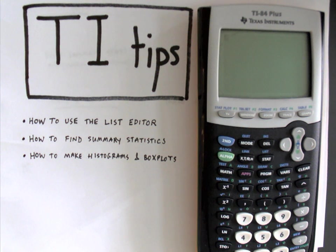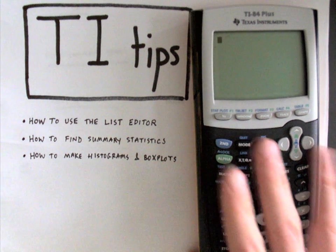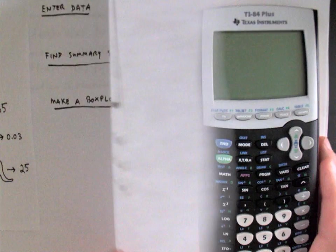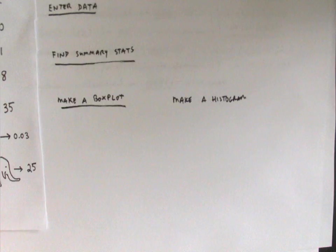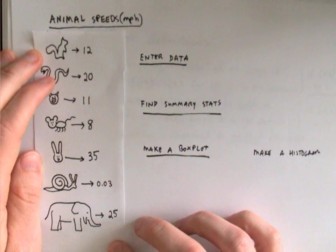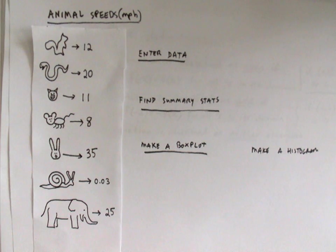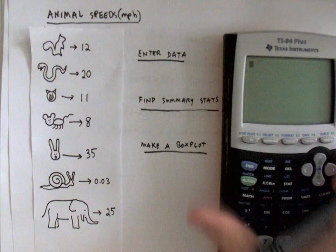So to get started here we're going to need some data, so as I get my data set I want to make sure you get your calculator out and follow along so you understand how to use the different functionality. The data set that we're going to use is a sample of animal speeds in miles per hour, and there's seven animals whose pictures I knew how to draw, and I'll show you first how to enter those into your calculator.